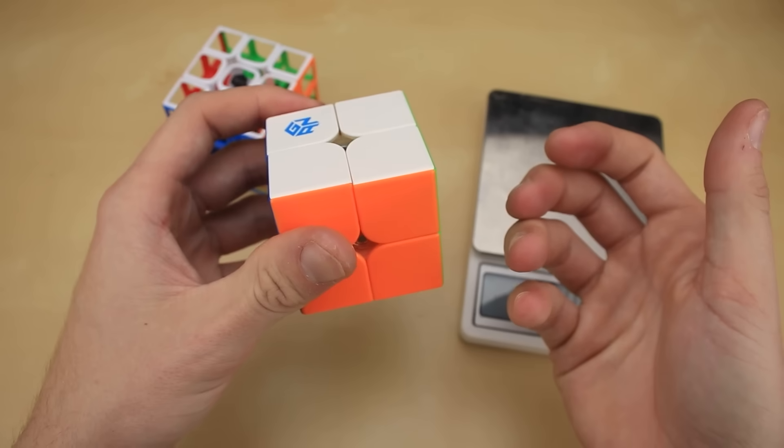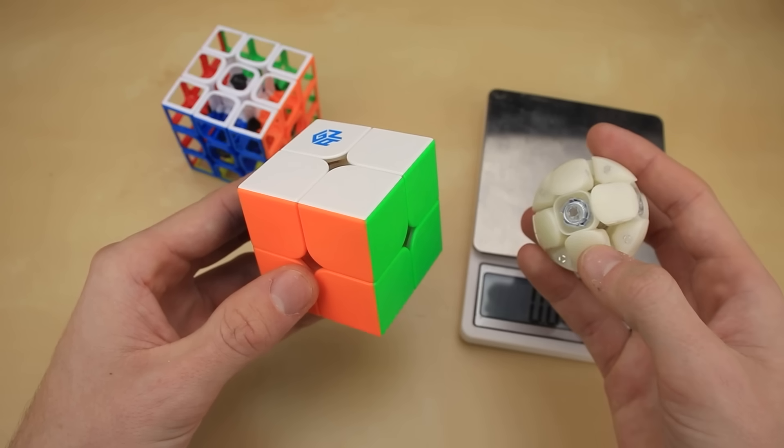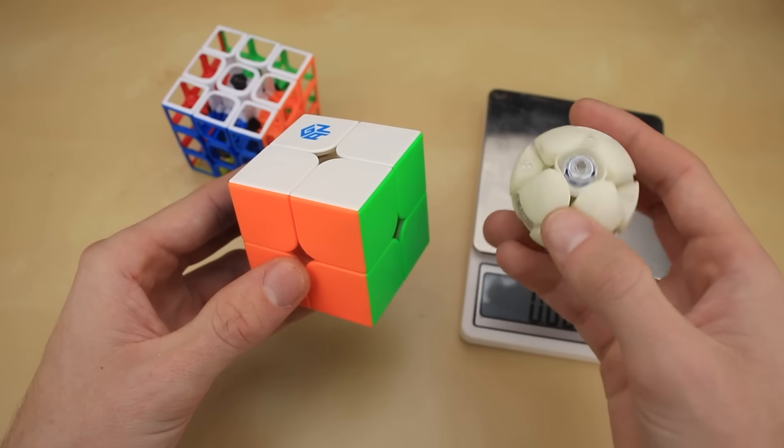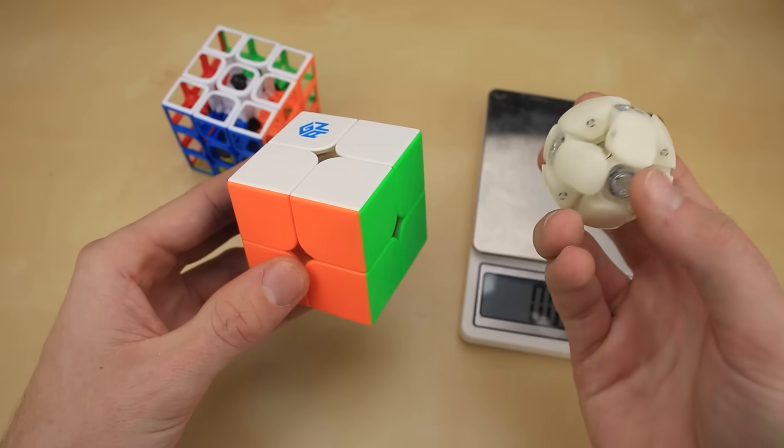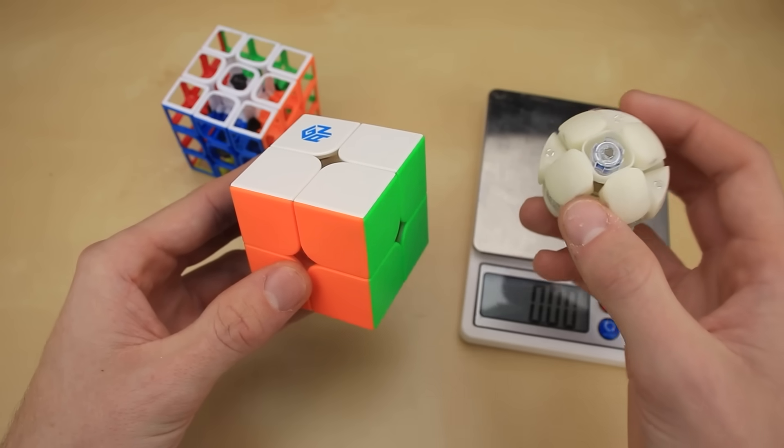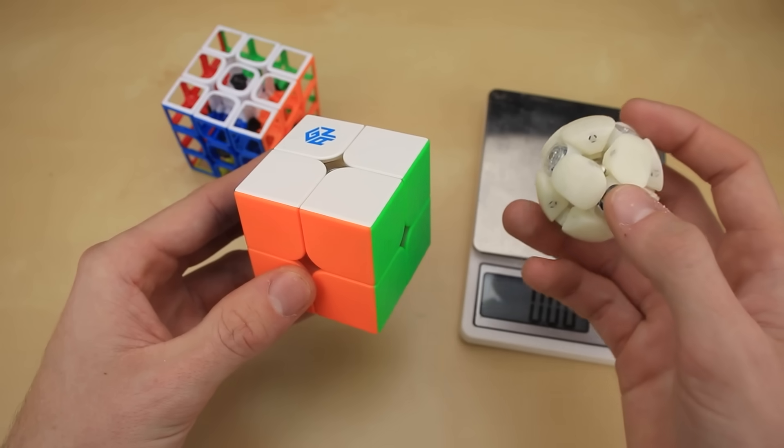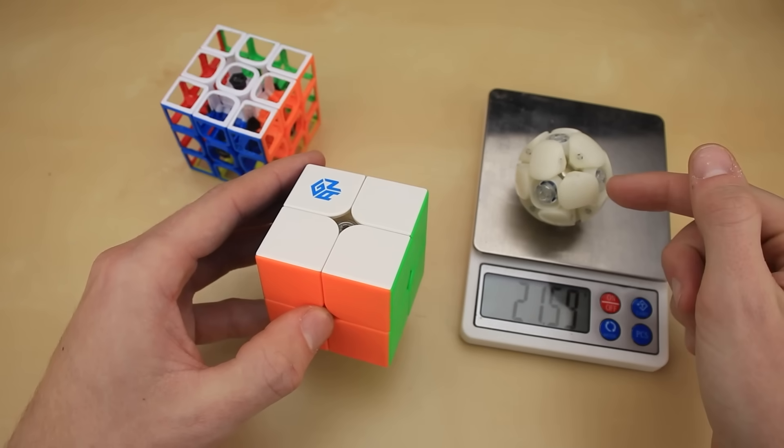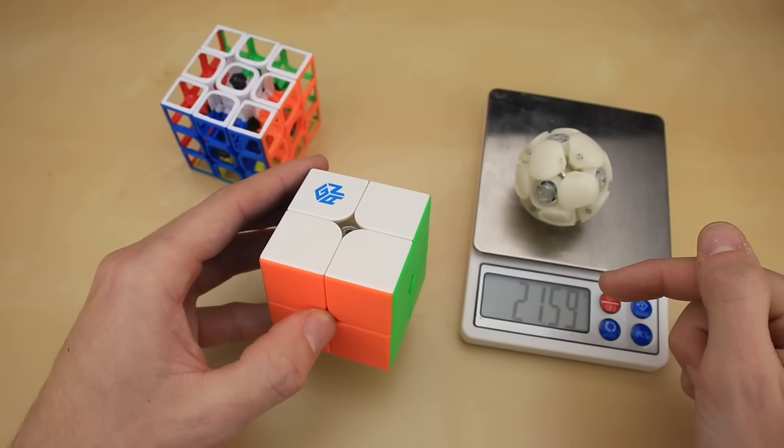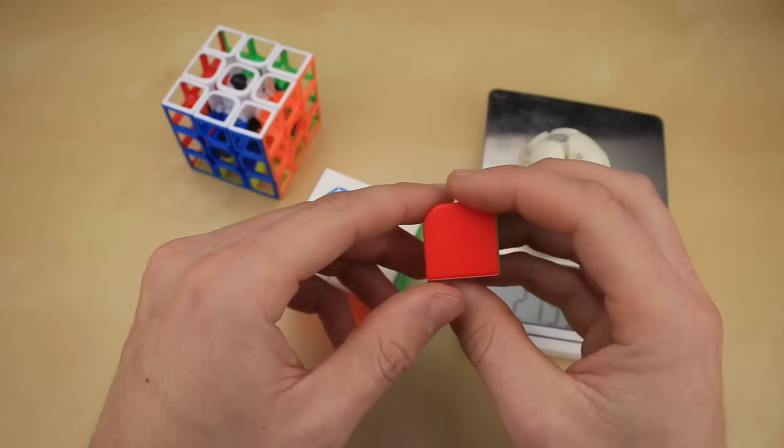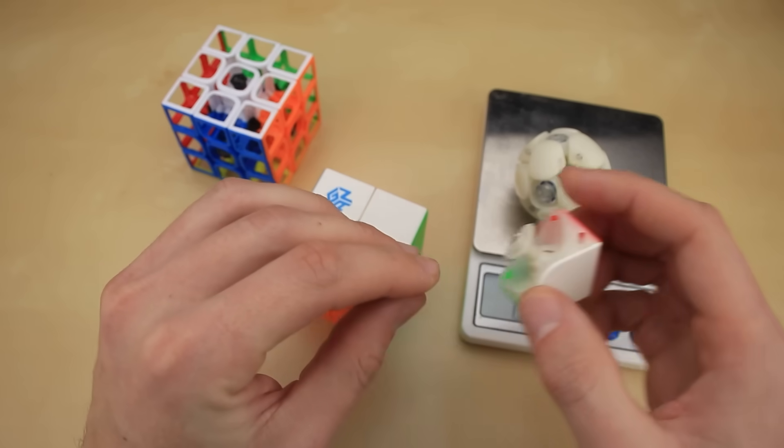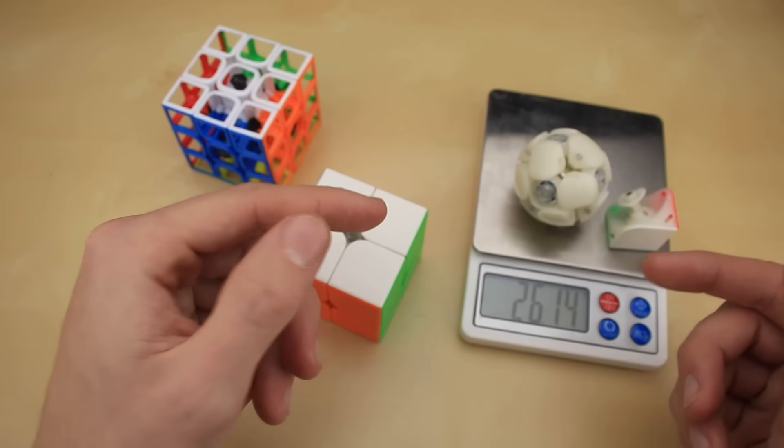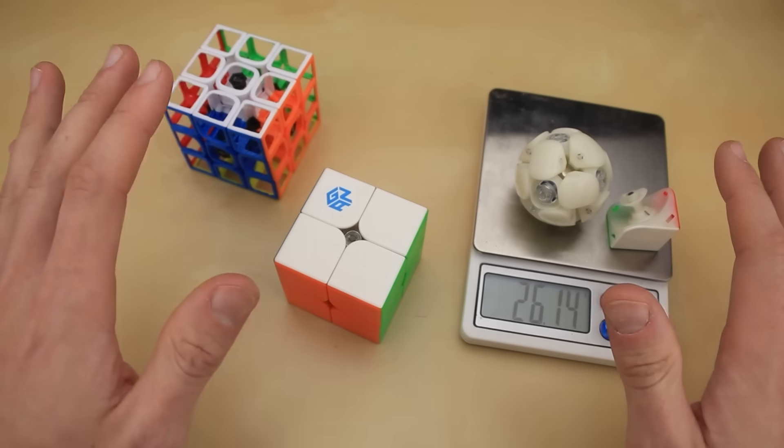At least without compromising the mechanism. To prove that point, here's what the core of this exact 2x2 looks like. Now, we could probably shave off a little bit of weight, like by removing the magnets, but for the most part, we're stuck with this entire thing if we want the cube to still function. And on its own, the core of this 2x2 weighs over 21 grams. That means by the time we add on all these outer pieces with the holes in them, the cube will probably weigh upwards of 30 or 40 grams, which is just way too heavy.